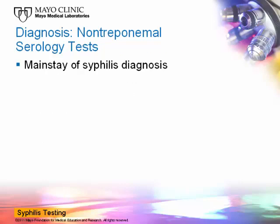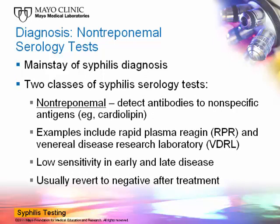That brings us to serology, which has been the mainstay of syphilis diagnosis for decades. There are two classes of syphilis serology tests, with the first being the non-treponemal assays. These tests are designed to detect antibodies to nonspecific antigens, such as cardiolipin, that are produced in most patients with syphilis. Examples of non-treponemal tests include the rapid plasma reagent, or RPR, and the venereal disease research laboratory, or VDRL, assays. These tests have demonstrated good performance, but can show low sensitivity in very early or late disease. Importantly, these tests usually revert to negative after successful treatment, so they can be used to monitor response to therapy.